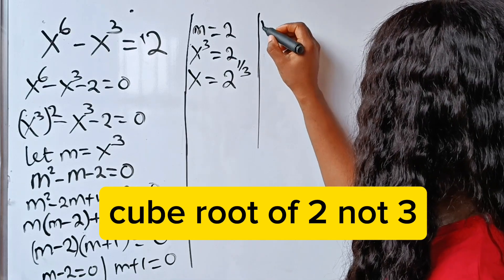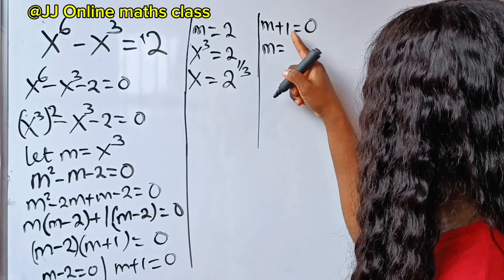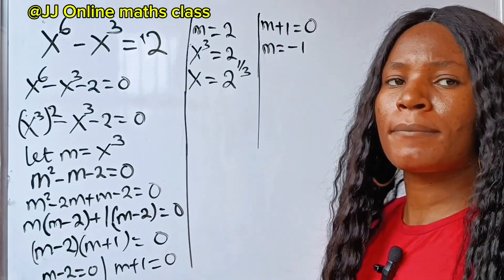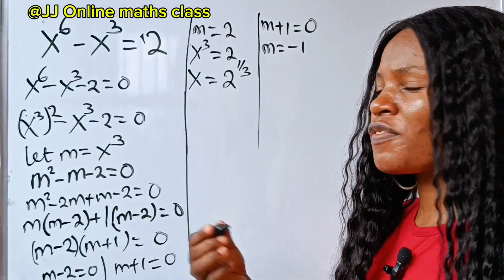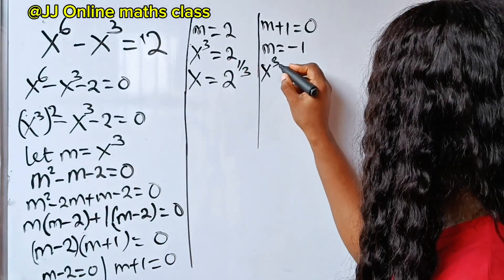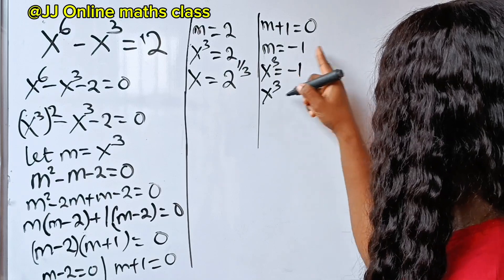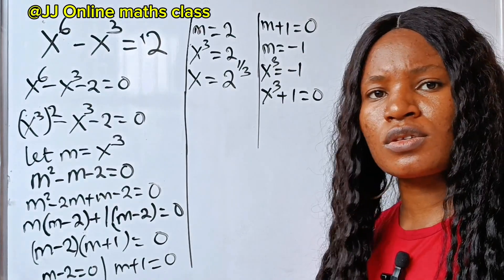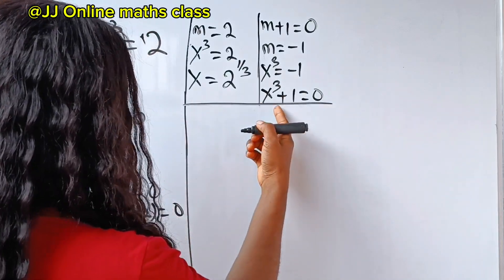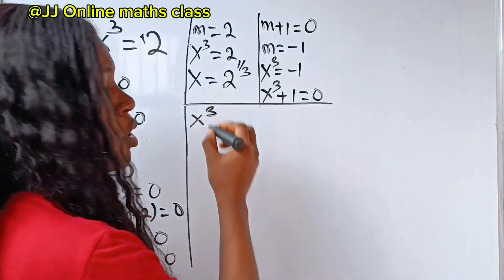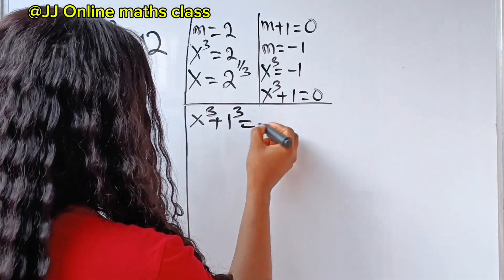For the other factor, m plus 1 equals 0, which means m equals minus 1. Recalling that m equals x to the power of 3, we have x to the power of 3 equals minus 1. Bringing the minus 1 to the other side gives x to the power of 3 plus 1 equals 0. We can rewrite this as x to the power of 3 plus 1 to the power of 3 equals 0, since 1 to the power of 3 is still 1.